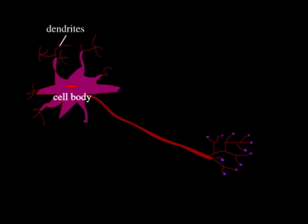Every neuron consists of a cell body, dendrites, an axon, and the terminal branches of the axon.